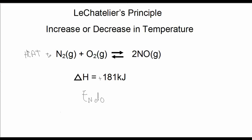Now we can address what would happen if we increase or decrease the temperature. If we were to increase the temperature — imagine putting the reaction under a flame — we would be adding more heat to the system. Heat is on the left side, so the reaction would shift to the right.